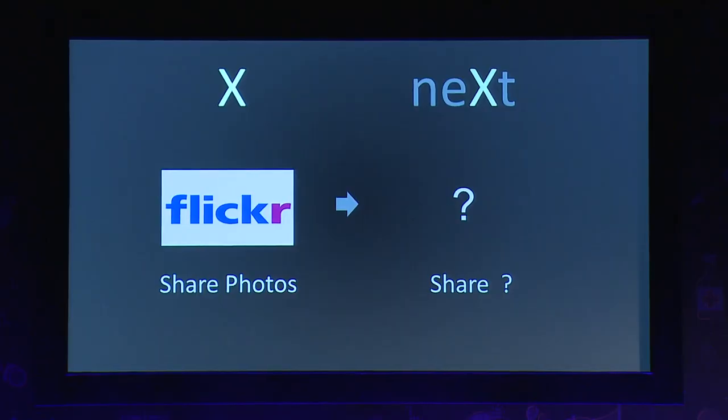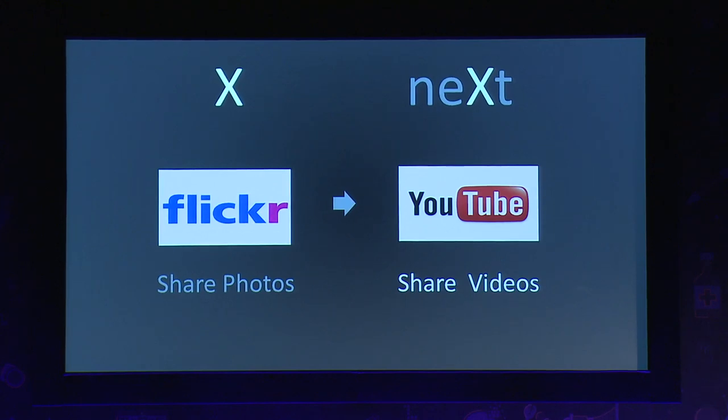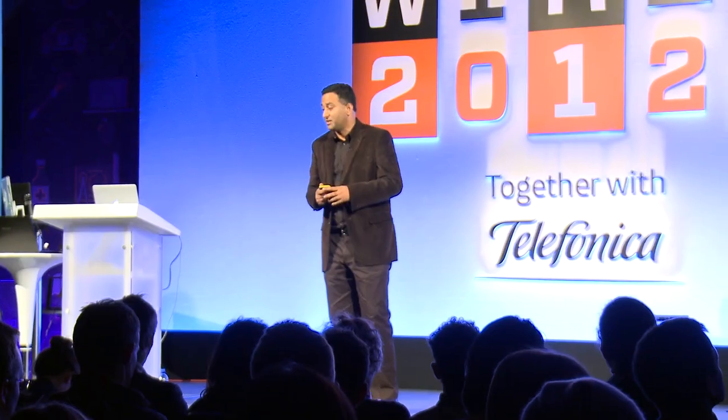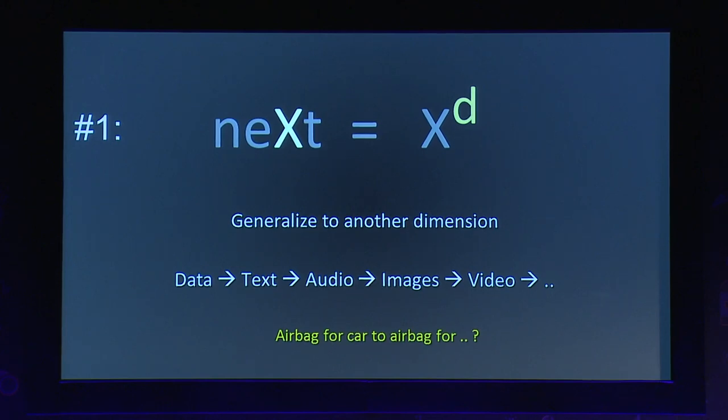If somebody told you a great idea — you can share photos online — what would be your next idea? Share videos. Flickr was sold for a few million dollars and YouTube was sold for $1.6 billion. All we have done is gone from images to video. So you already know the first strategy: generalize the idea to the next dimension. What you can do for data, do it for text, for audio, for images, for video.